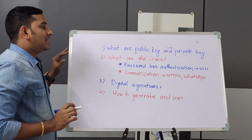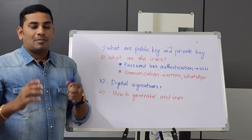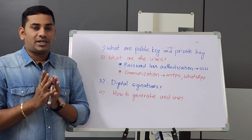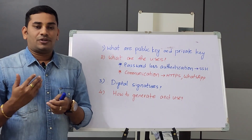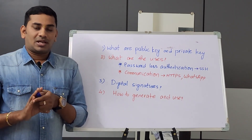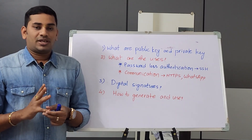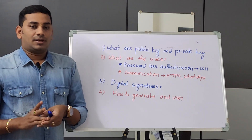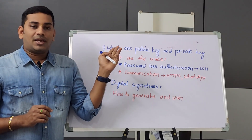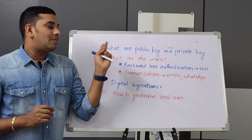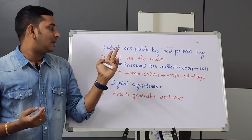So first, public key and private key. They are one of the cryptographic methods. Public key and private key are a pair — one public key, one private key. By seeing the public key, no one can guess or hack the private key. The public key is public — anyone can see it. But the private key lies only with the owner.